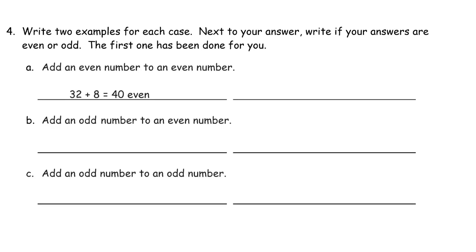Write two examples for each case. Next to your answer, write if your answers are even or odd. The first one's been done for you. So same thing that we just did. Write two examples for each case. This says add an even number to an even number. And then after you find your total, write whether it's even or odd. So even, two, even. Two plus six equals eight. Even.